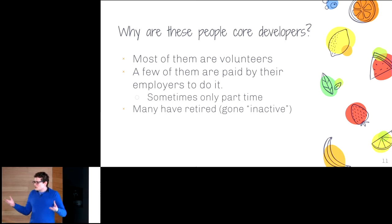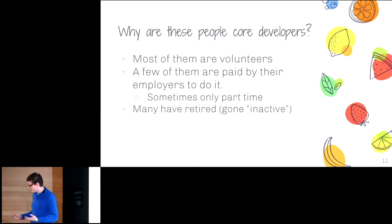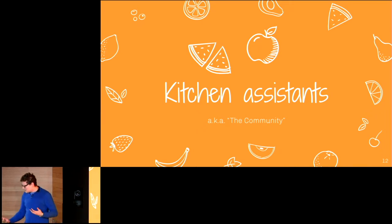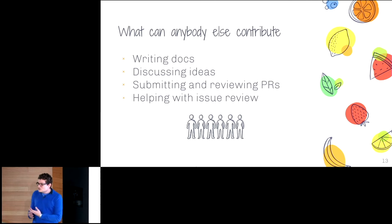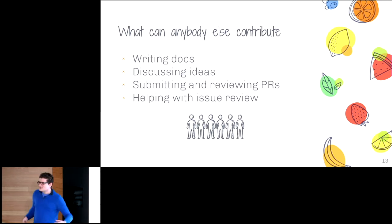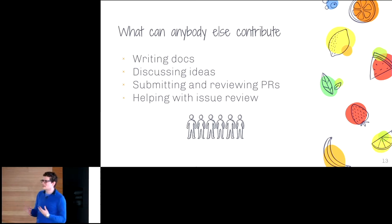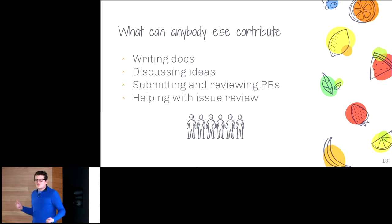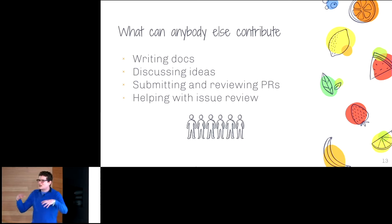These core developers commit every commit in your Python repo and build most of what you use. But as an open source project, there are also a lot of individual contributors from all over the world who are not core developers — the kitchen assistants. It's not just writing code, but writing documentation, discussing and proposing ideas, submitting and sometimes reviewing pull requests and issues. Someone might post an issue on the tracker, another non-core developer confirms they can reproduce it, which helps the core developer decide if it's an actual bug. And sometimes a community member submits a pull request, so the core developer only has to review and accept or reject.